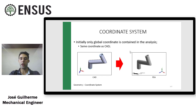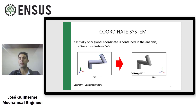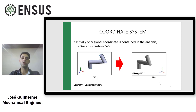The first thing I want to highlight is that the same coordinate system we have in CAD is the global coordinate system we have in ANSYS. This one here in the left image is the coordinate system from CAD, and when I import it, you can see it works - I have the same coordinate system in the same location as in CAD. It's important to understand how to create coordinate systems because there are many times you want to change the directions.